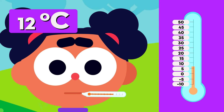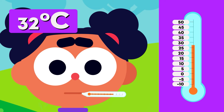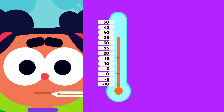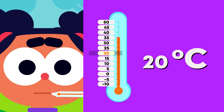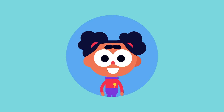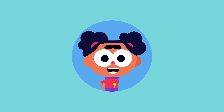The marker on the thermometer goes up as the temperature gets higher. Let's count together — my temperature is 5, 10, 15, 20, 25, 30, 35 degrees Celsius. Well done everyone!